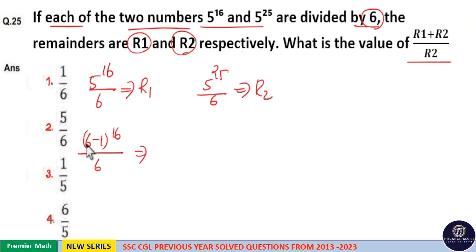That is, take the numbers. That is 6 and minus 1. 6 raised to 16 by 6 means there is no remainder.